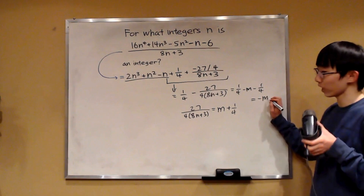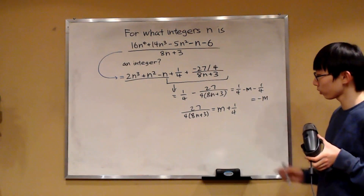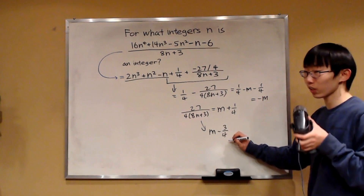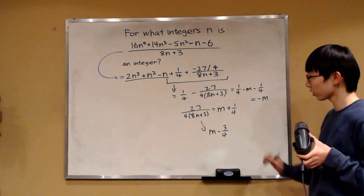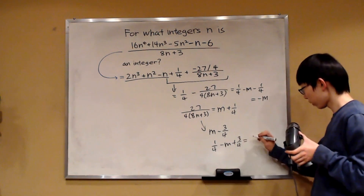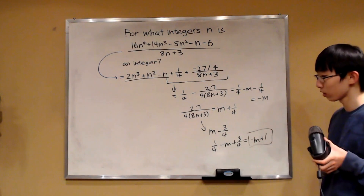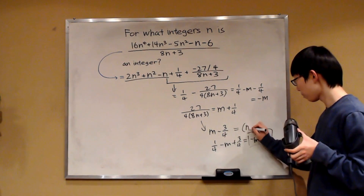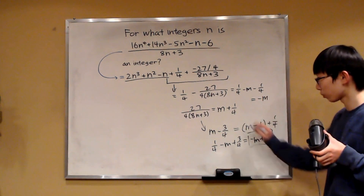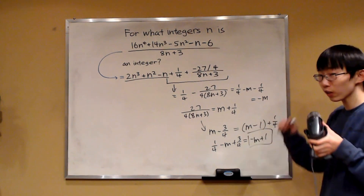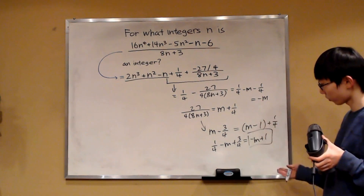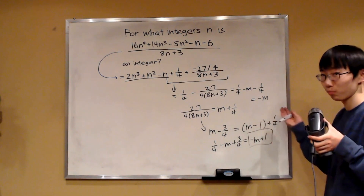Substituting m plus 1 over 4, we get 1 over 4 minus m minus 1 over 4, which equals negative m — an integer, since m is an integer. You might wonder if we should also consider the form m minus 3 over 4. Well, that's a good thought, but substituting gives 1 over 4 minus m plus 3 over 4, giving negative m plus 1, which is an integer. But this can be rewritten as (m minus 1) plus 1 over 4 — the same form as before. So both forms are congruent; there's no need to consider both.